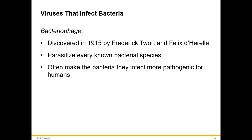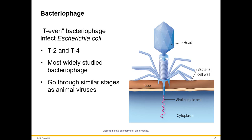A bacteriophage is a virus that infects bacteria. Discovered in 1915, it can parasitize every known bacterial species and often makes the bacteria more pathogenic for humans. The T-even phages — T2 and T4 — infect E. coli and are the most widely studied. They go through similar stages as animal viruses, but because bacterial cells are so small, the phage does not enter the cell; instead it clamps onto the surface and injects its genetic material into the cytoplasm.